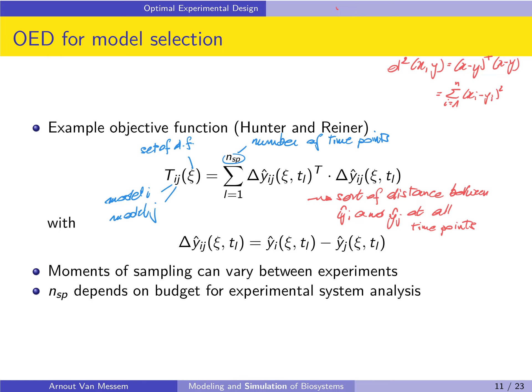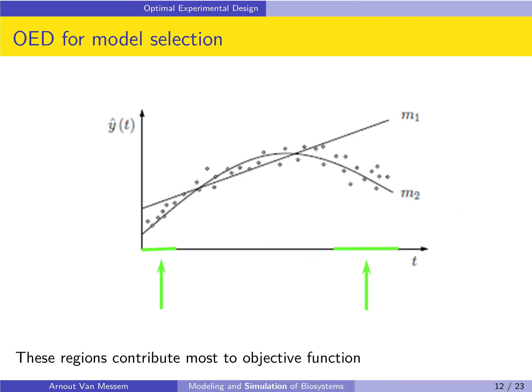So what this tells you is that the objective function of Hunter and Reiner basically is some sort of distance between the predictions of model i and model j at all different time points. In order to find the easiest distinction between both models, we have to maximize this distance. In other words, we have to choose the experimental conditions ξ such that the difference between the predictions of both models is maximal. If we do this, we see that the regions in green, the regions most to the left and most to the right, will contribute most to the objective function because the distance between model 1 and model 2 is largest there.